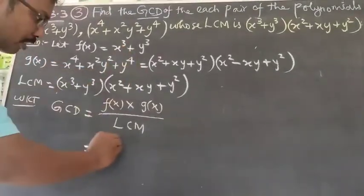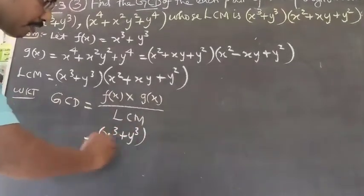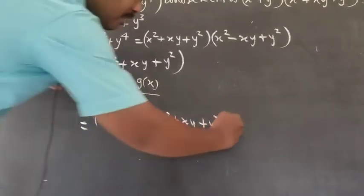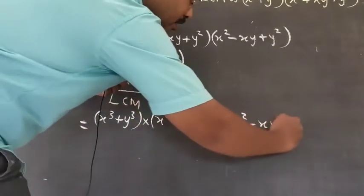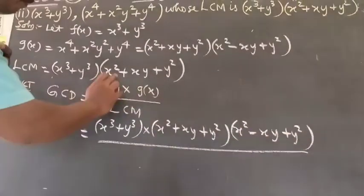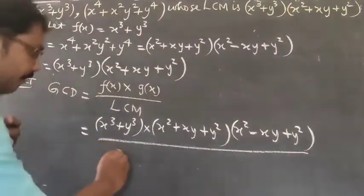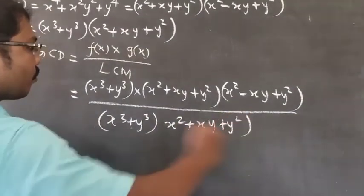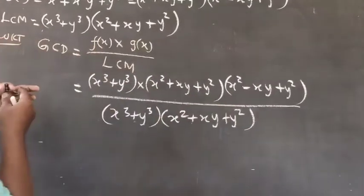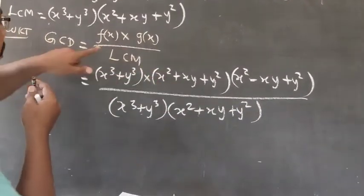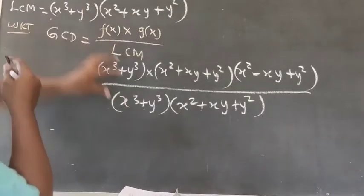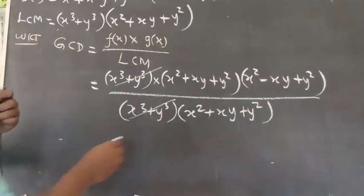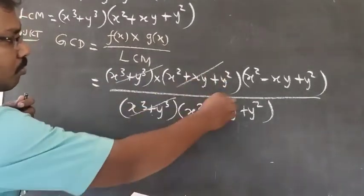So, F of X which is X cube plus Y cube, times G of X which is X square plus XY plus Y square times X square minus XY plus Y square, all divided by the LCM. Substituting the values, X cube plus Y cube and X square plus XY plus Y square cancel out.